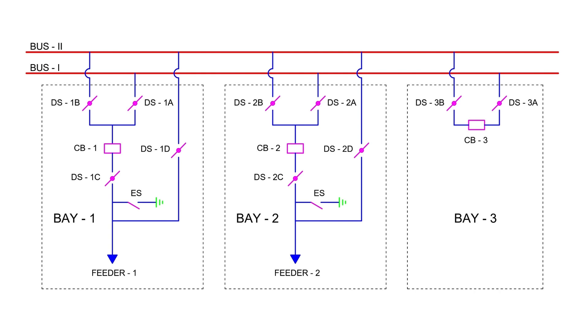The double bus single breaker scheme is a configuration widely used in power systems. It involves two bus bars, four isolators or disconnect switches, one earth switch, and one circuit breaker in each bay. But you might be wondering, what exactly is a bay? We'll explain this terminology shortly.